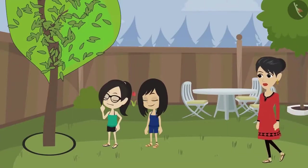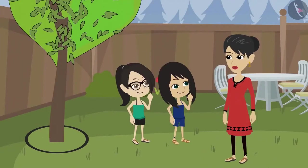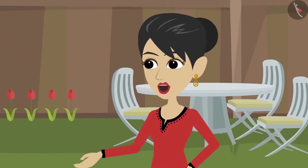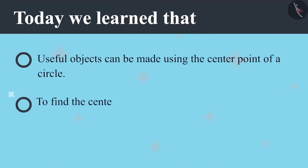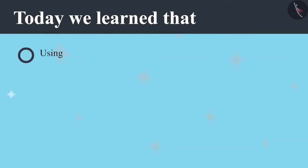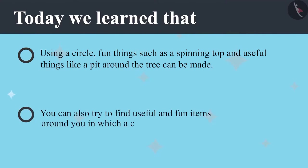Now let's show it to mummy. You made it yourself? How? It was easy mummy, using a thread. You both are getting older and smarter. Today we learned that useful objects can be made using the center point of a circle. To find the center of a circle shaped paper, it has to be folded in half and then half again. A circle can be used to make fun things such as a spinning top and useful things like a pit around a tree.